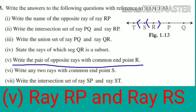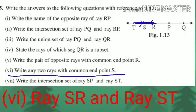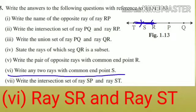Next, question number five: write the pair of opposite rays with common end point R. From point R, there are two rays — one going to the left and one going to the right. So your answer is ray RP and ray RS. You can also write ray RP and ray RT. Next, write any two rays with common end point S. From point S there are two rays — one on the left side and one on the right-hand side, meaning opposite rays. So your answer is ray SR and ray ST.